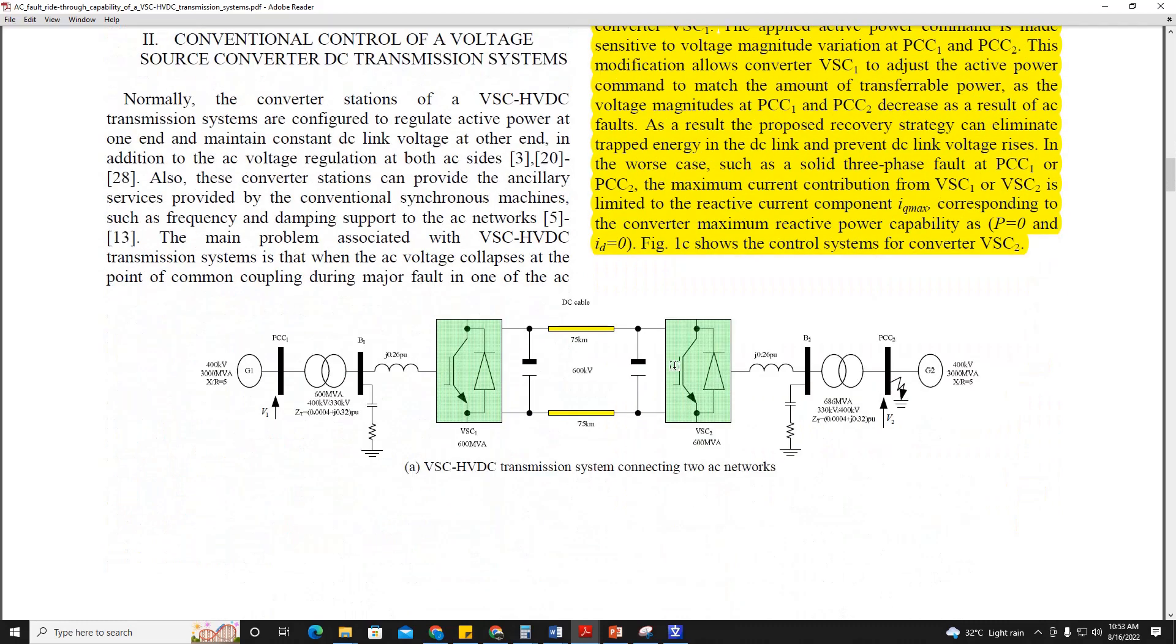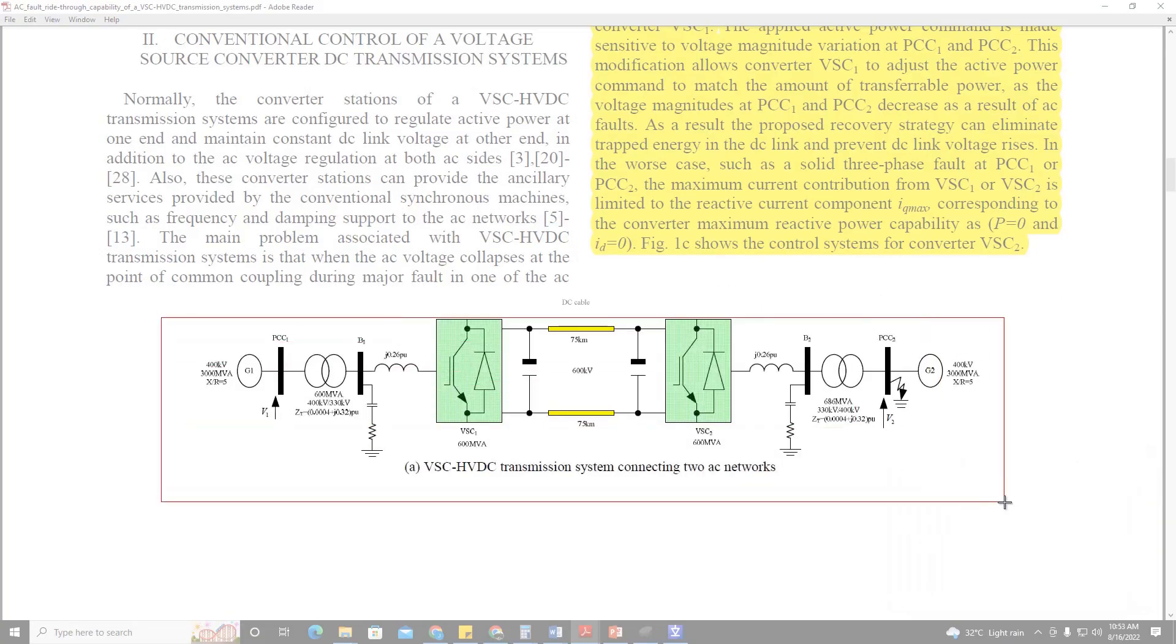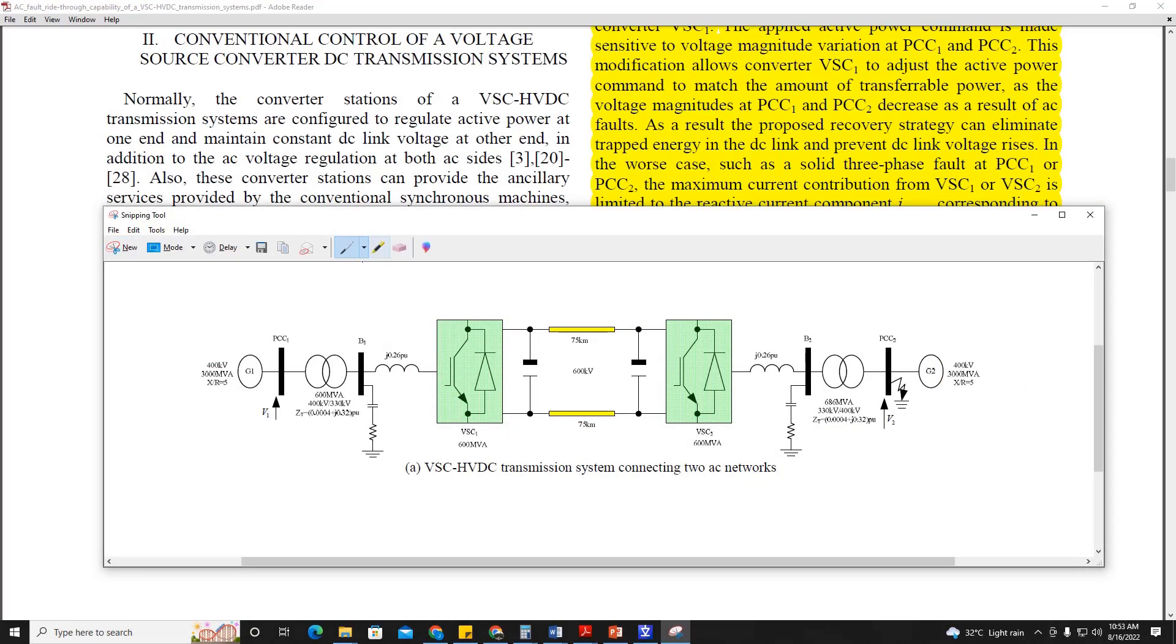So this is a model. This is a single line diagram of the model used in this research paper. Right now, as we can see, the fault is happening here at point of common coupling 2, V2, at grid 2. This is a voltage source converter, not MMC, and SPWM sinusoidal pulse width modulation is used at a switching frequency of 2.1 kHz.